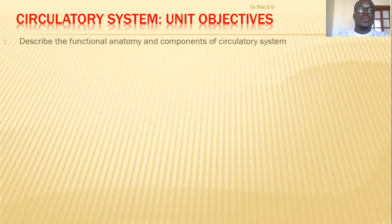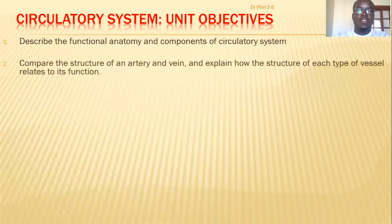Since it's a new unit, you need to understand the unit objectives. At the end of this unit, you should be able to understand and do certain things. The first objective: as a student you should be able to describe the functional anatomy and components of the circulatory system. Then you should be able to compare the structure of an artery and a vein and explain how the structure of each type of vessel relates to its function.